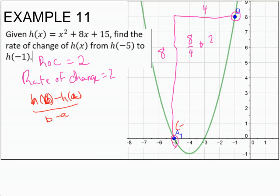So we look at our points. This is negative 5 and 0, and this is the point negative 1 and 8. So we'll say that this one's a, this one's b.